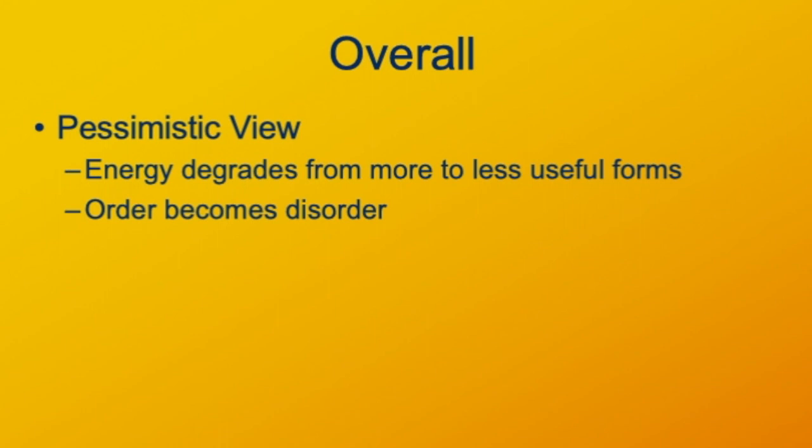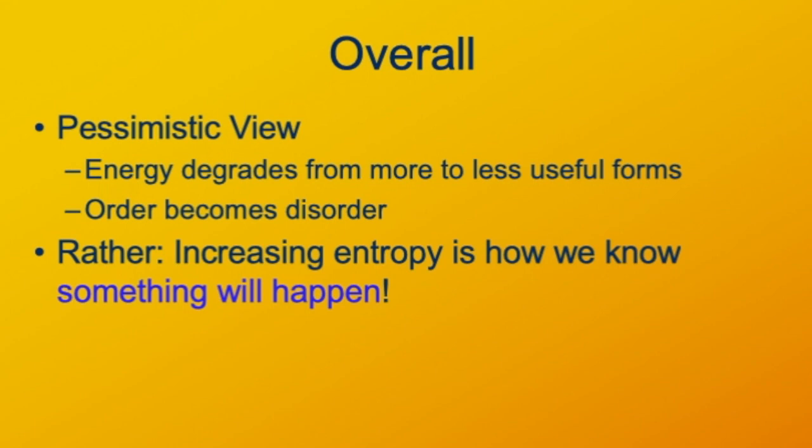What the second law of thermodynamics is telling us is why things go the way they do. In other words, how we can have a difference from the past to the future, how in fact we can predict what's going to happen, how we can know what will happen with any sort of process. Increasing entropy is how we know something will happen.